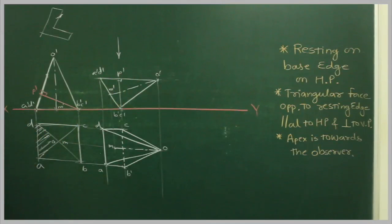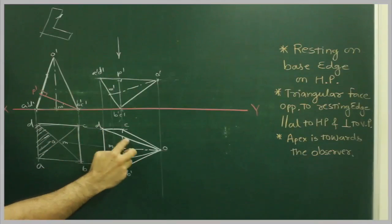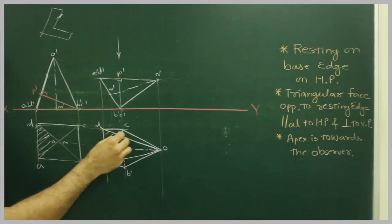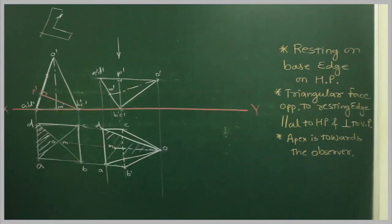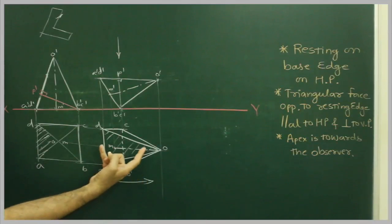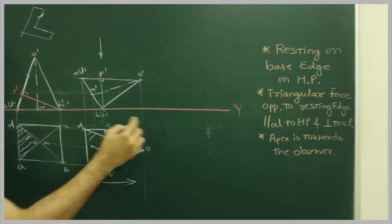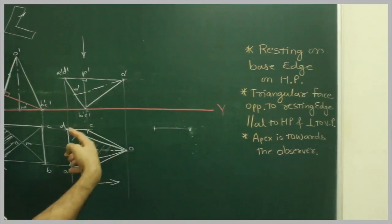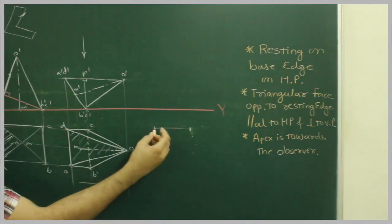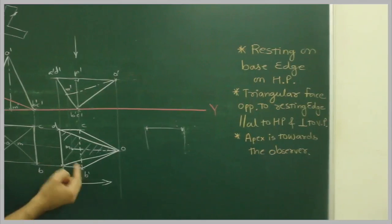The triangular faces are already parallel to the horizontal plane. Now we need to draw this triangular face perpendicular to the vertical plane, and the apex is towards the observer. So what we will do is rotate this diagram 90 degrees clockwise. That means we will draw this again. Draw a line, take AD, and cut AD.